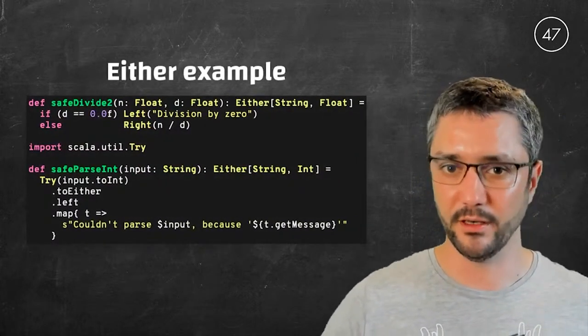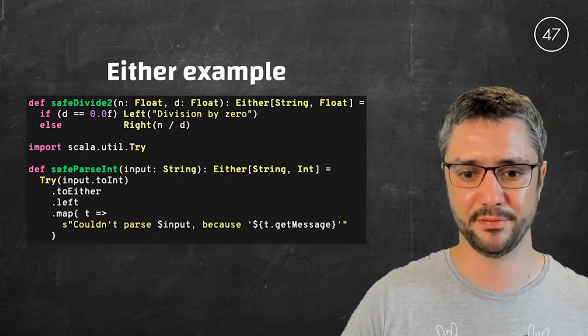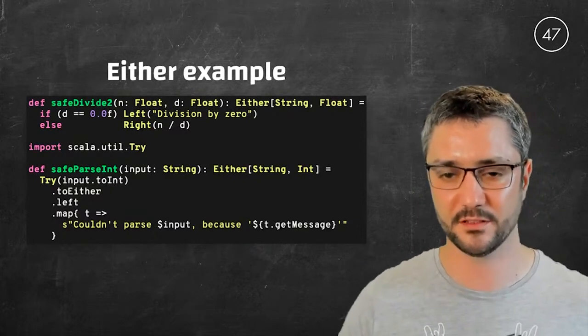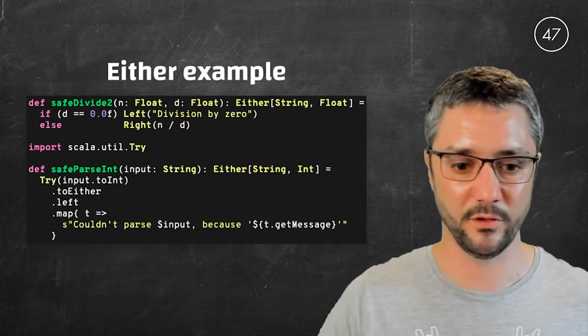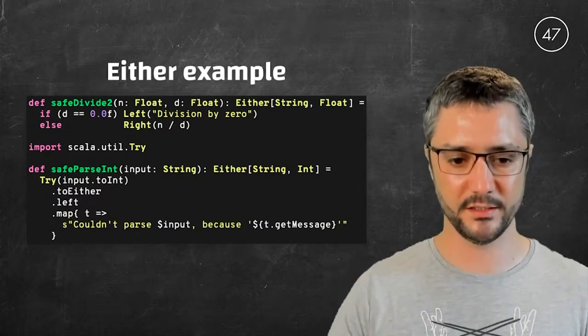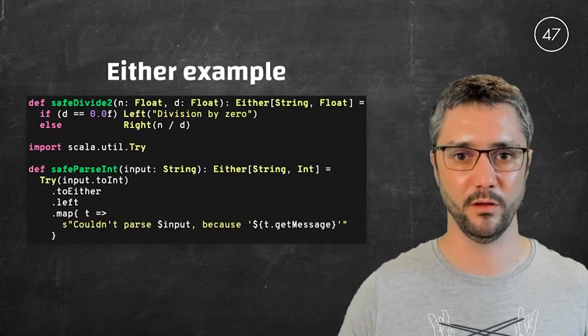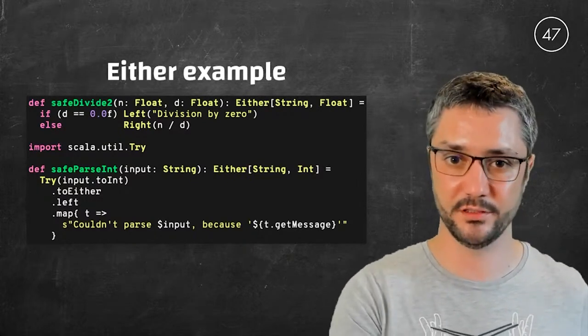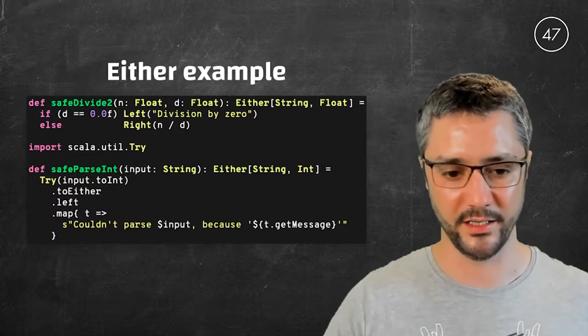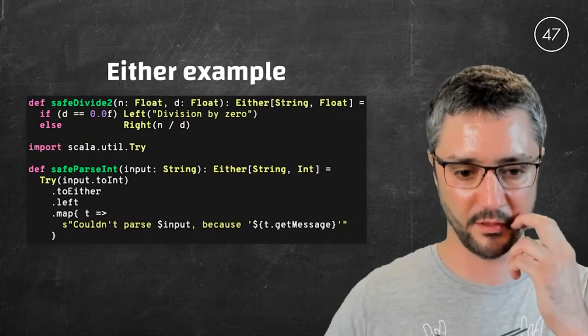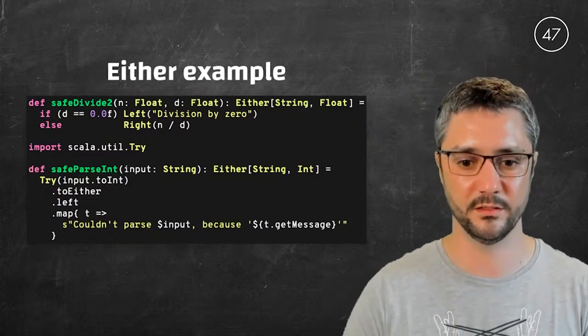So we could go back to our examples using either. On the division, we can just wrap the division by zero into a left and provide a message saying you are trying to divide something by zero. Won't work. And for the integer parsing, we can simply transform the try into an either. And then, this would give us an either throwable and int. And so we have to change the error branch into a string to return an either string of our int. So it is done by dot left dot map. And the T parameter of map, the function inside map, is a throwable. And we can massage it into a string to return an either string or int.